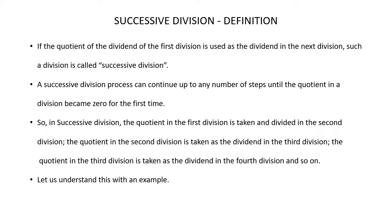Let's understand what is successive division. When you divide a number by another number, if the quotient of this first division is used as the dividend in the next division, such a division is called successive division. A successive division process can continue up to any number of steps until the quotient becomes zero for the first time.